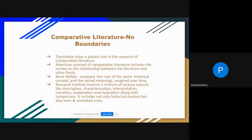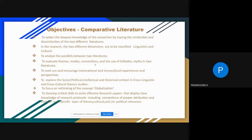We can also compare the unrelated concepts of two different literatures in a parallel way. The first main objective of comparative studies is to widen the deepest knowledge of the researcher by tracing the similarities and dissimilarities of two different literatures — for example, national literature compared with regional literature. That is the main objective of the research method in comparative studies.